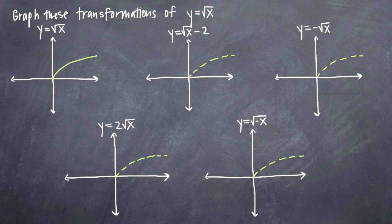Remember that if you ever run into transformations on a test, you can always just plug in points for x and then start plotting your results on your axes. That's your fail-safe when it comes to transformations. I've graphed our original function y equals the square root of x on this first set of axes.